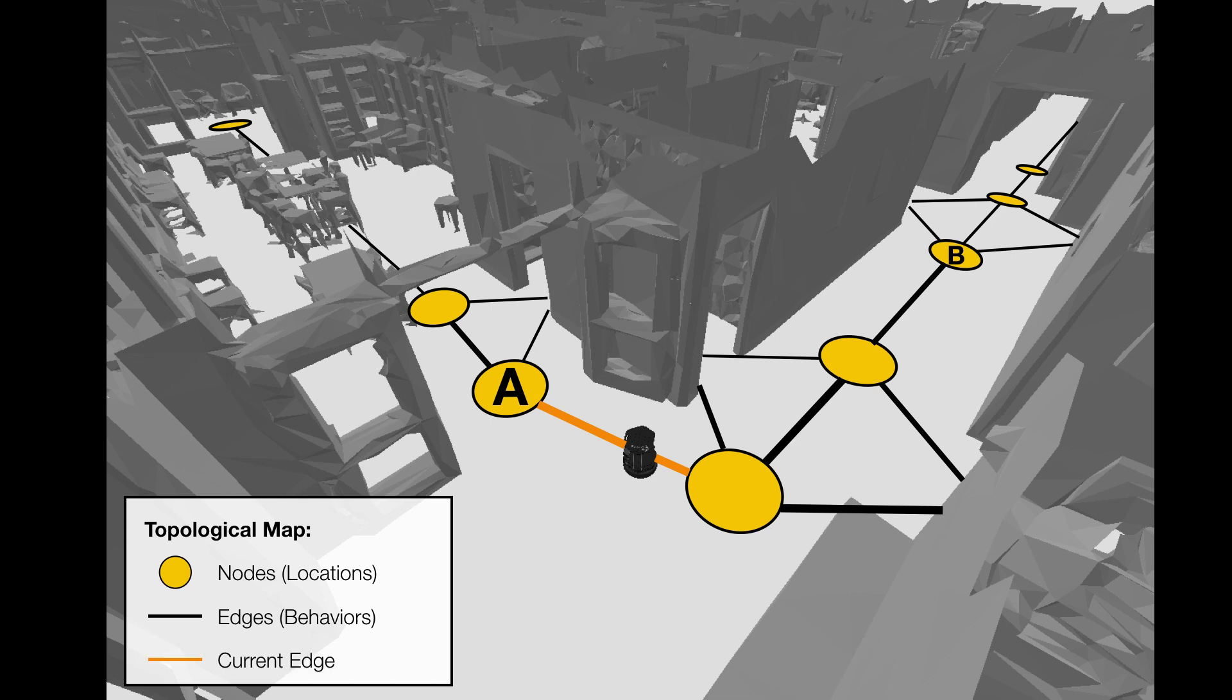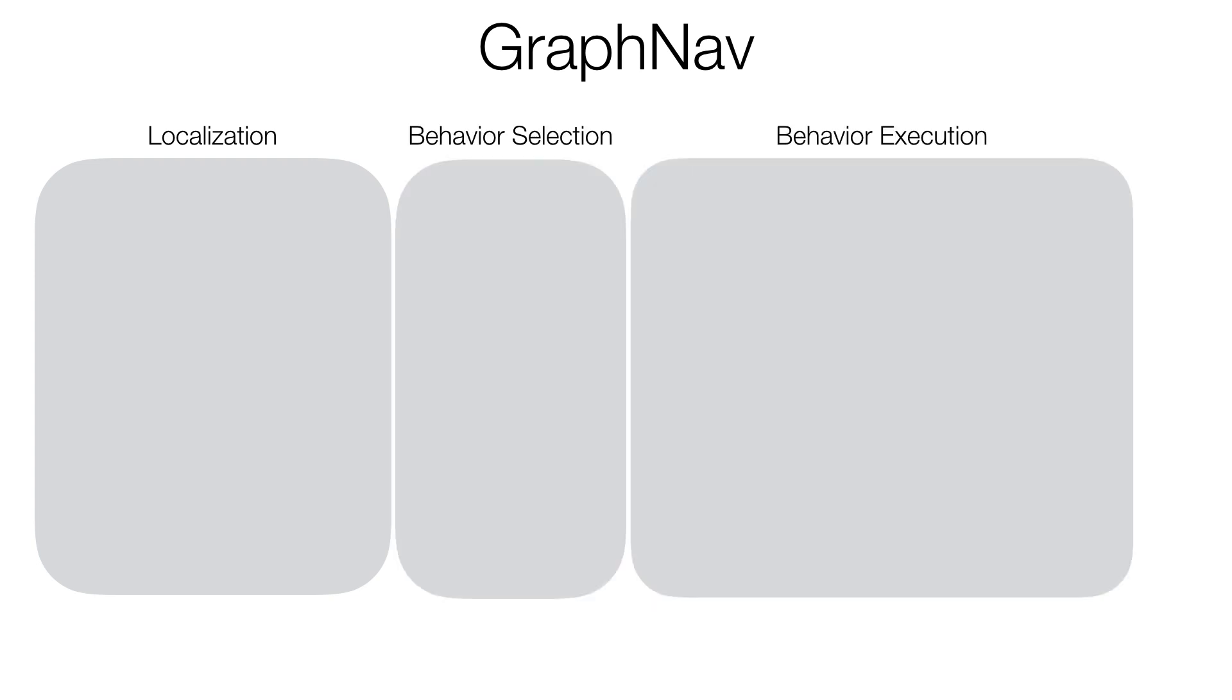Here in particular, the orange line depicts the current edge that the robot is in the map. Our proposed navigation approach, GraphNav, is structured into three main components: localization, behavior selection, and behavior execution.